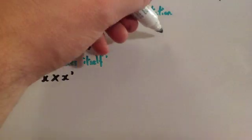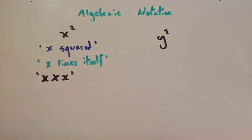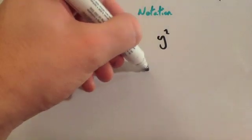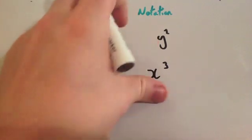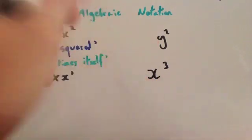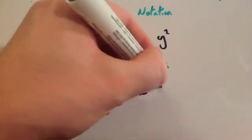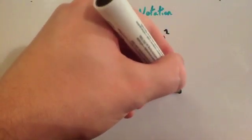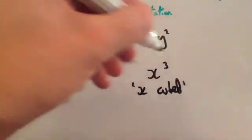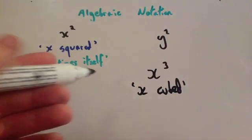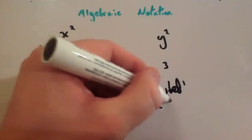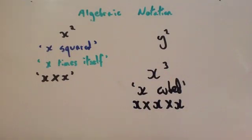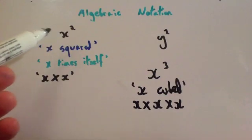If you had y squared, it would be y squared. If you had x with a little 3 above it, it would be read as x cubed, because a little 3 means cubed. Or x times x times x. This little 2 means squared, so this would be x squared.